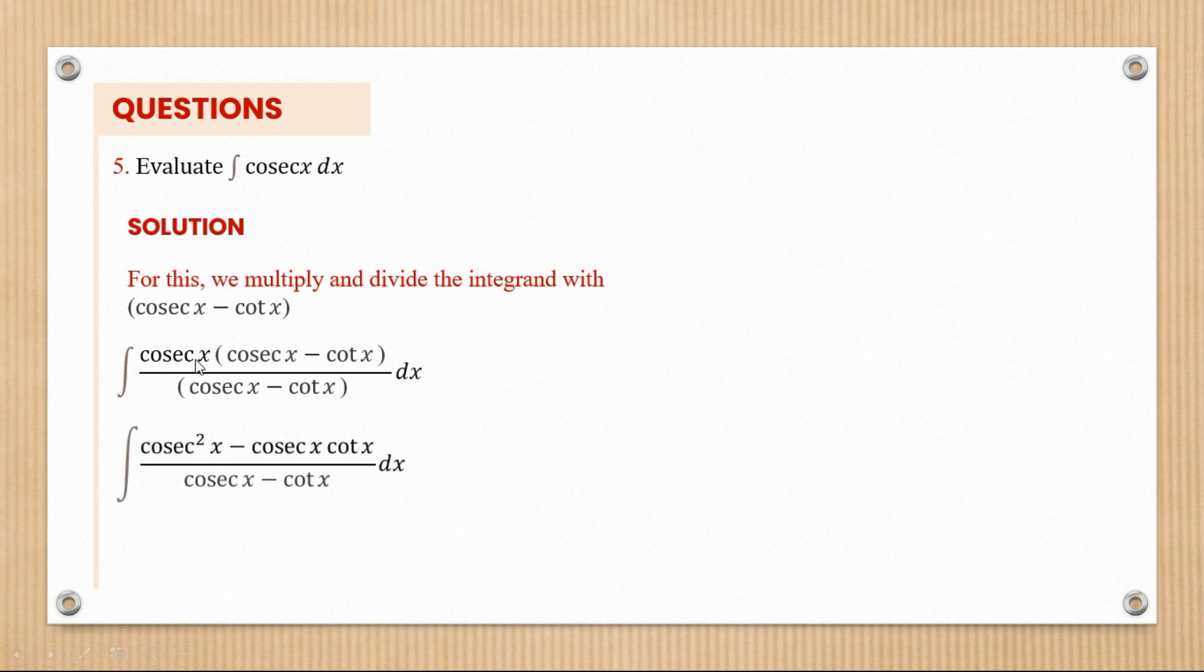Let's open brackets. In opening brackets, we'll have cosec squared x minus cosec x cot x.